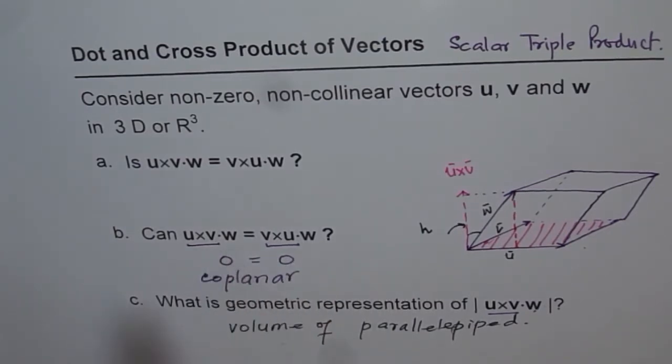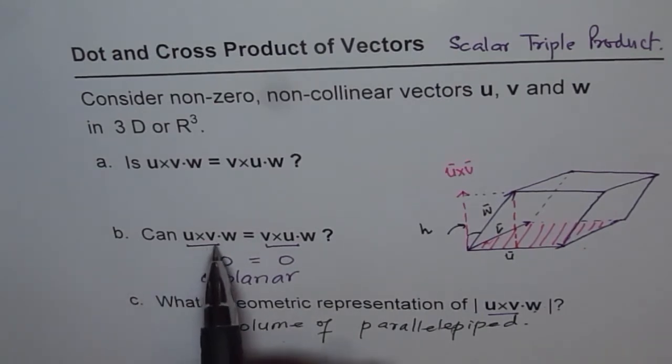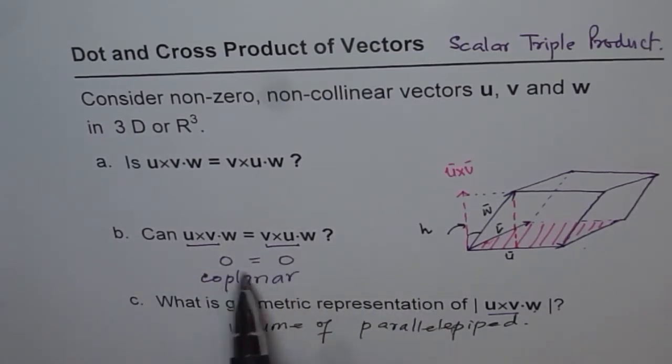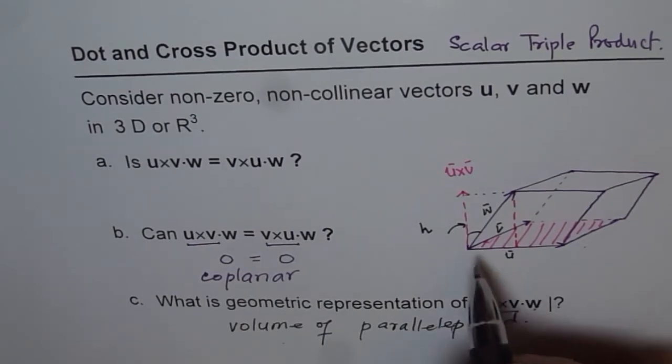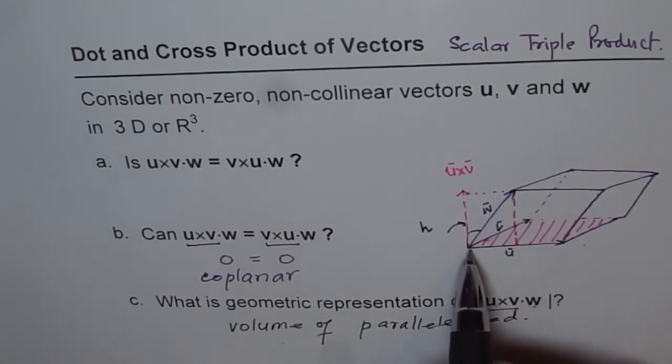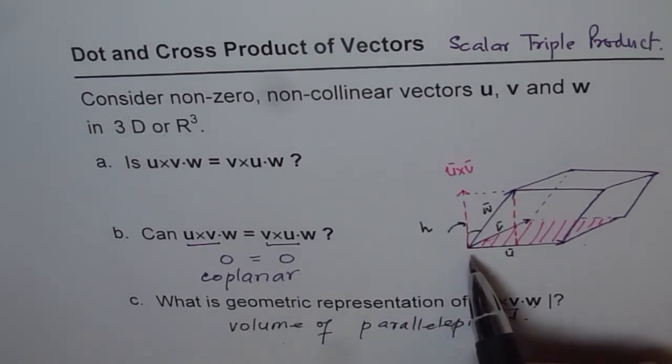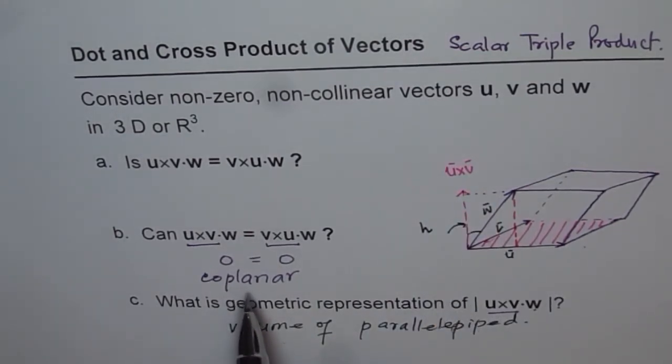Here, the order doesn't matter. You could even do v cross w and then dot it with u if they are co-planar. And then you will get the same product. So if they are co-planar, imagine w is in the same plane. In that case, whether you do u cross v or v cross u, you will get and then dot with w. Since they are in the same plane, they will be at right angles to u cross v or their cross product. So you will get 0. So that is possible when they are co-planar.